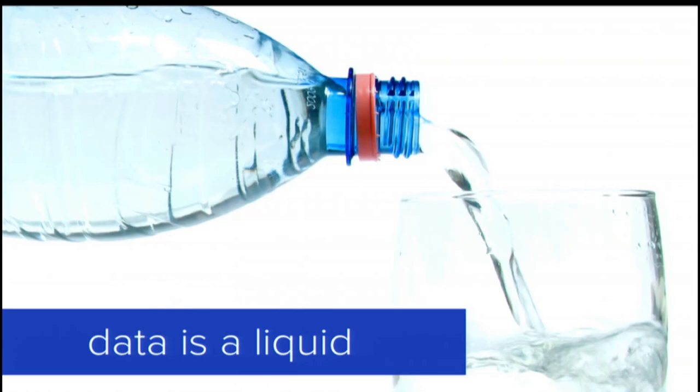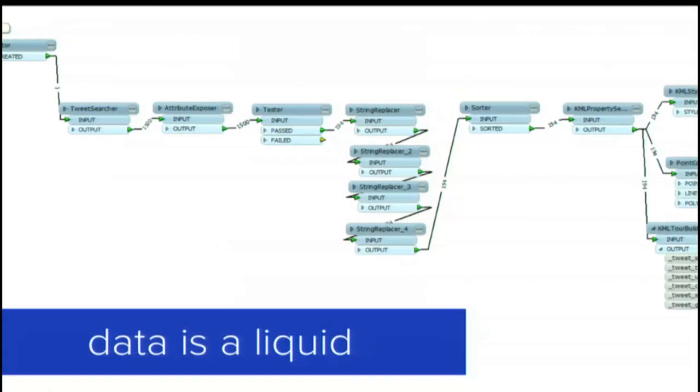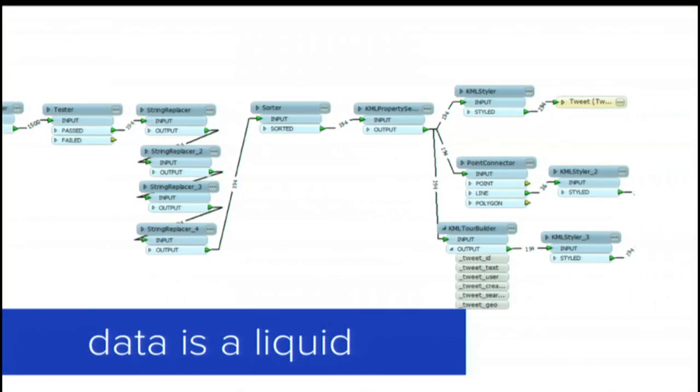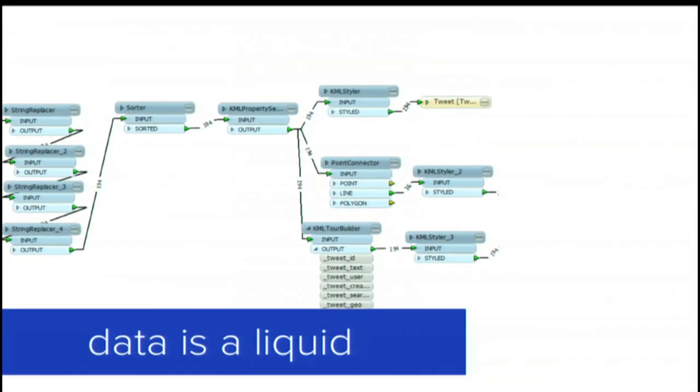You don't chip away at it a record at a time — you pour it in batch from receptacle to receptacle, changing the shape of it on the way from round holes to square holes and back again. When you understand that data is a liquid, your definitions of what a big change or what a lot of work means — those definitions change. The bounds of what you understand is possible expand. Data is a liquid. That's a great learning I got early on from FME.